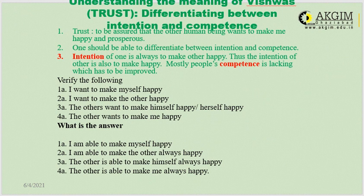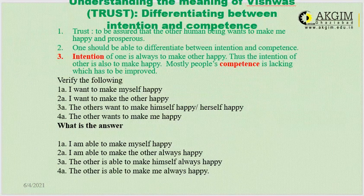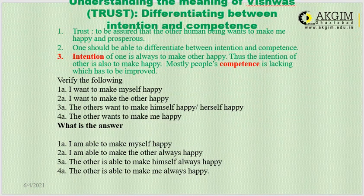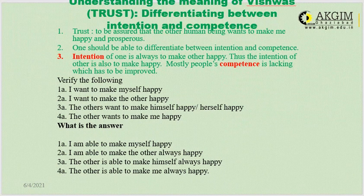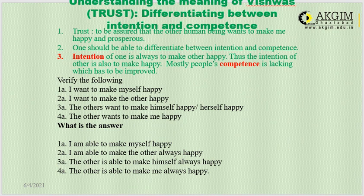If we verify the following sentences: I want to make myself happy; I want to make the other happy; the other wants to make himself or herself happy; the other wants to make me happy — we can find that for the first three we are fairly confirmed. However, for the fourth — that the other wants to make me happy — we have a doubt. When we look at the answers, whether we are always able to make ourselves happy is also uncertain, and whether we are always able to make the other happy is also in question. In all these cases, we are falling short somewhere.